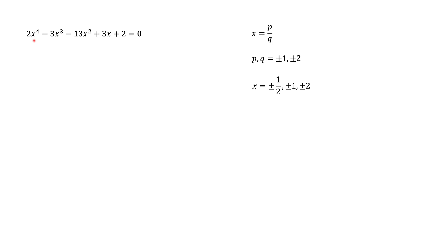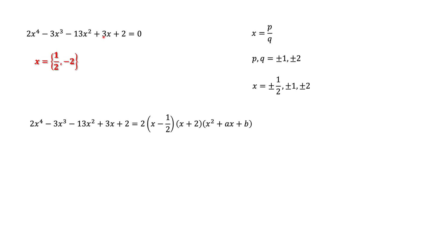Now, if you plug these numbers into our equation, we can check that 2 out of the 6 numbers actually work. It turns out that one half and minus 2 are the solutions of our equation. We can now take our polynomial and write it in a slightly different way — we can represent it as a product of several factors. First, we have 2, the leading coefficient, and then terms (x minus the root): so we have (x minus one half) and (x minus minus 2). What's left after this is a quadratic polynomial.